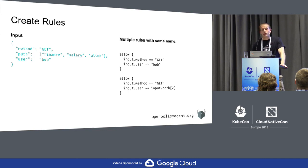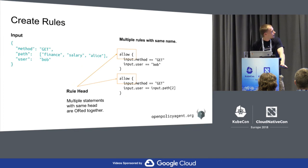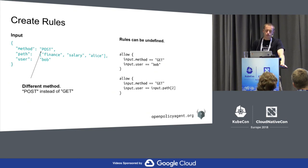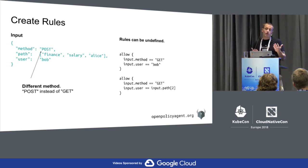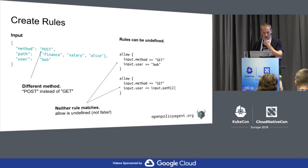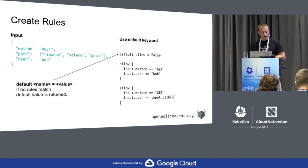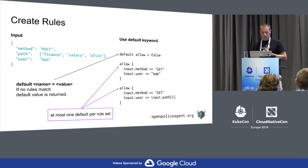If you want an OR, you write multiple rules with the same rule head — just as you would expect for a simple allow-and-deny rules language. If you have 10 or 100 or 1,000 allow statements and none of them apply, the value of 'allow' is undefined by default. There is a 'default' keyword in OPA that lets you specify the default value of any variable — for example, 'default allow = false'. You can only use one default per rule, and OPA will tell you if you've made a mistake.